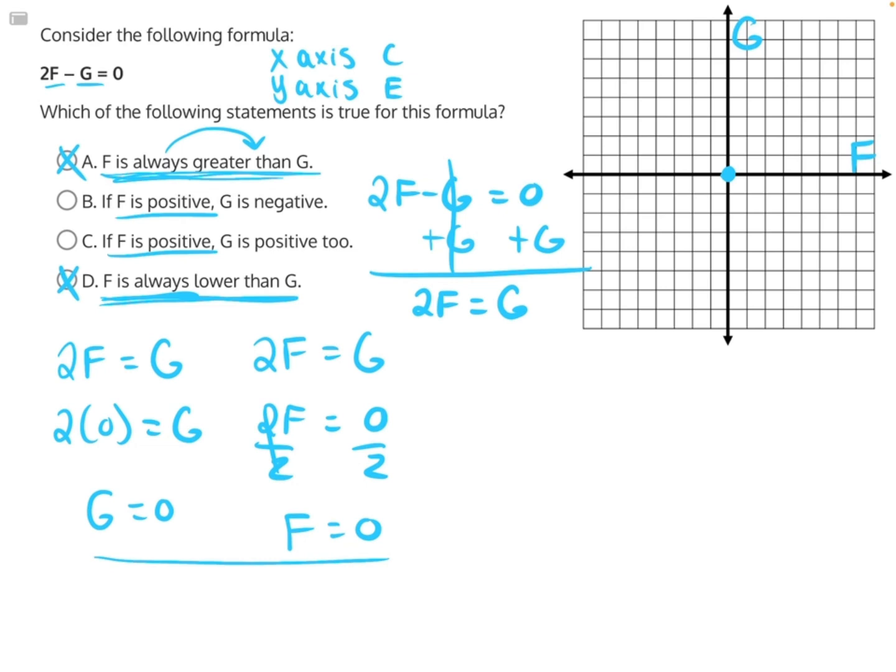So how do we graph this from here? Well, we could try plugging in other values to the function to get some different coordinate points. I would recommend the number two. So I'm going to rewrite my function twice down here. And then we're going to plug in two for both F and G.